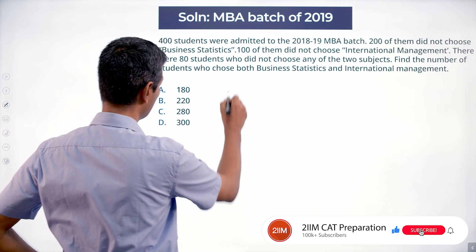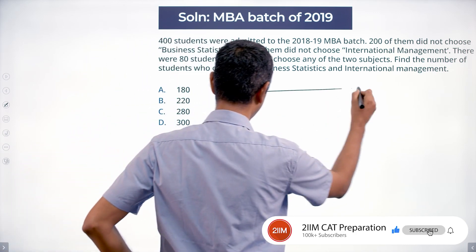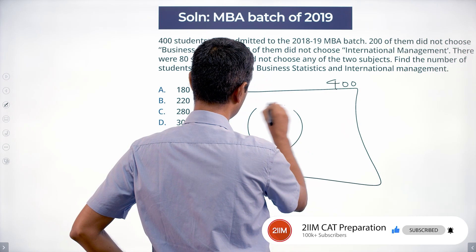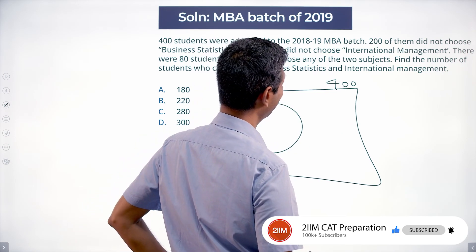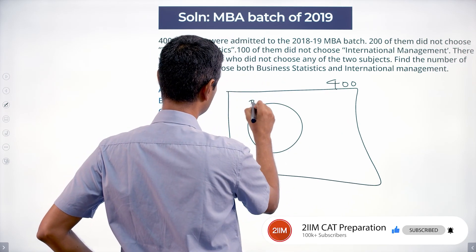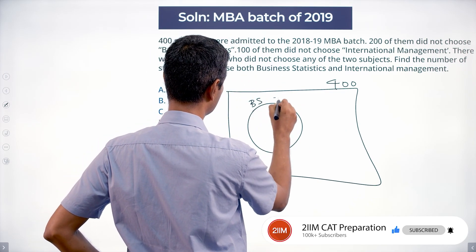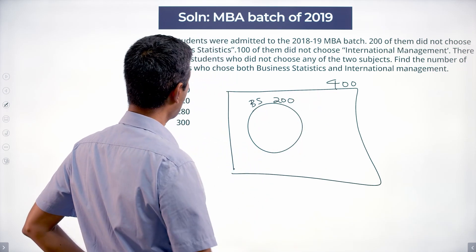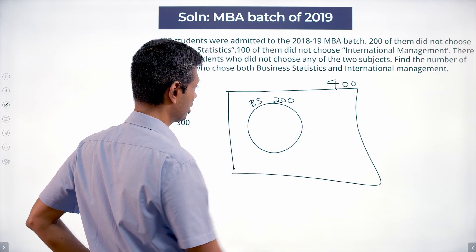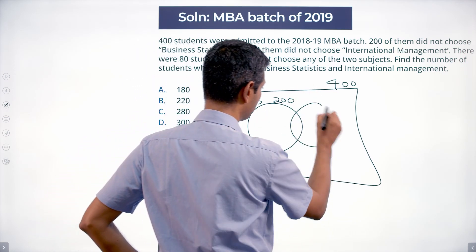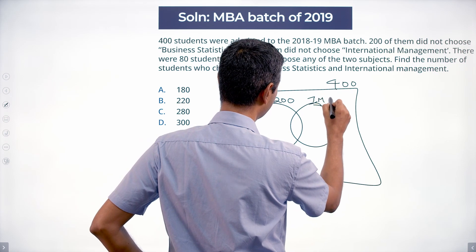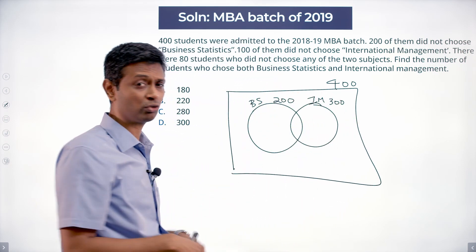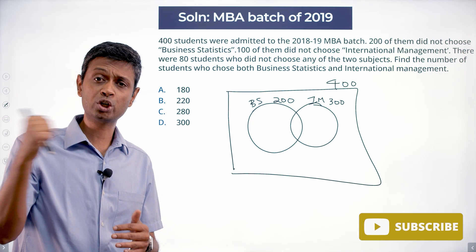This is a classic Venn diagram question. Draw the Venn diagram. Total is 400. 200 did not choose business statistics, so 200 did choose business statistics. 100 did not choose international management, so 300 did choose international management. The diagram is drawn for the number of people who did choose each subject.